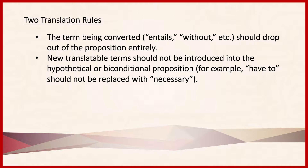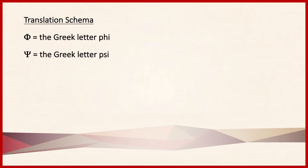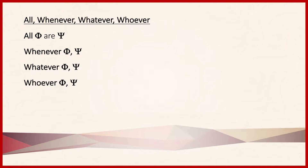In learning how to translate these terms, we're going to introduce a number of translation schema. Each schema will use the Greek letters phi and psi. The reason we do this is that if we use English letters, we can confuse ourselves because we know the ordinary order in which those letters appear. However, phi and psi are probably unfamiliar to most of you, so they function as random symbols. Phi and psi each stand for component parts of our propositions — for example, 'all phi are psi,' or 'whenever phi, psi.'